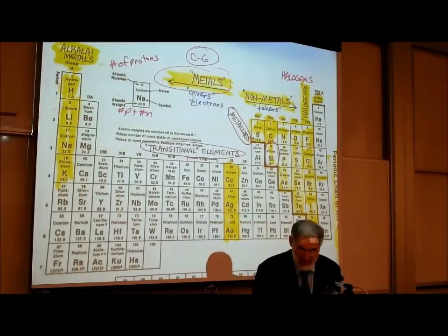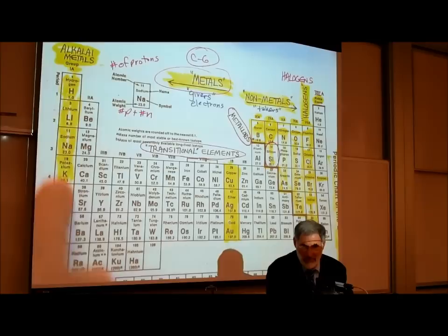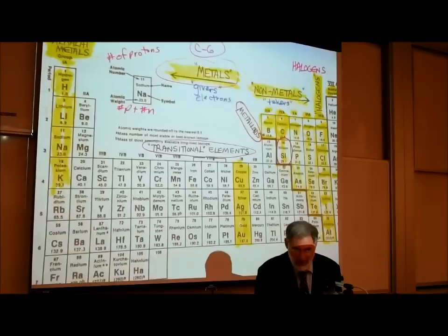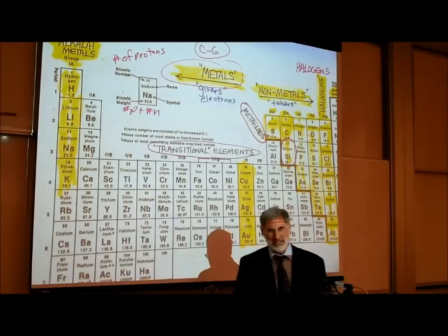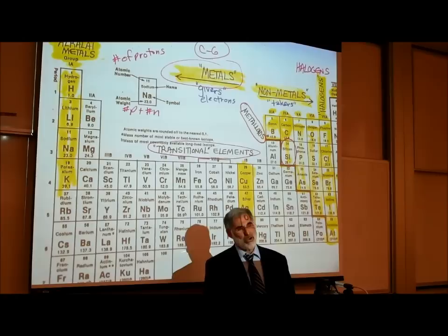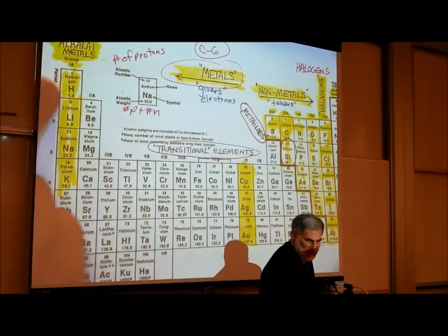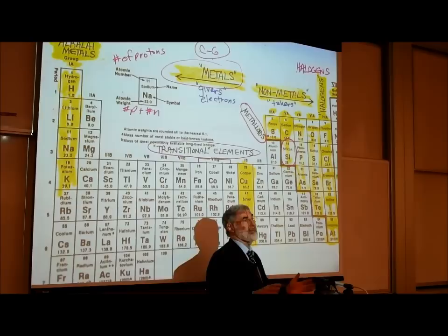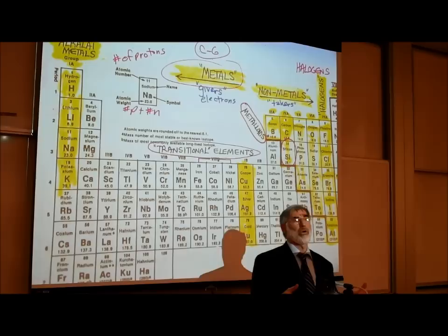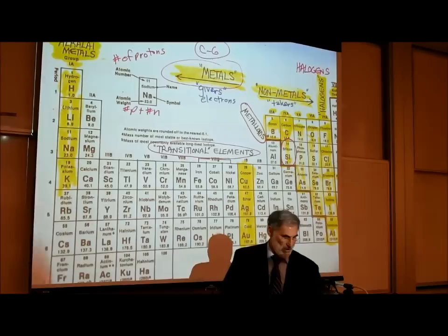The very first column is known as group one, or the alkali metals. These include hydrogen, lithium, sodium, potassium, and rubidium. All of these types of elements have similar chemical properties. We're going to see that the reason they have similar chemical properties is because all of them have one electron in their outer orbit. The number of electrons in the outer orbit determines the chemical properties of an atom.